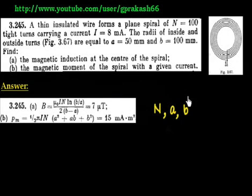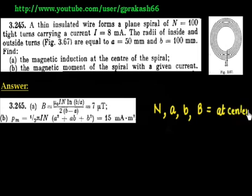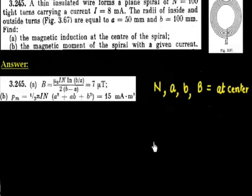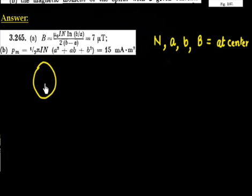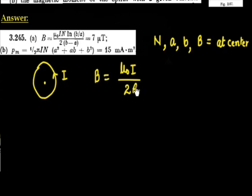We have to find the magnetic field at the center of the spiral. How do we proceed? This is quite tricky. We will use the result for a circular loop: if you have a circle carrying current I, the magnetic field at the center is given by B = μ₀I / 2R.